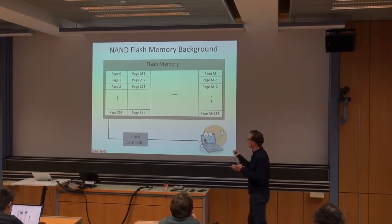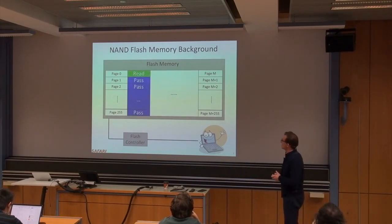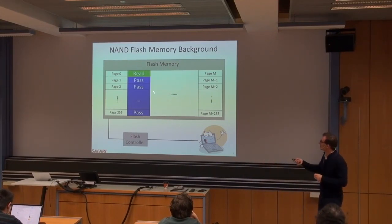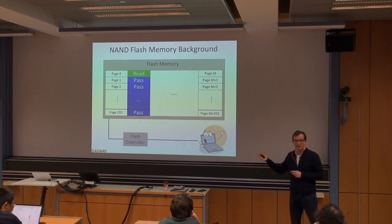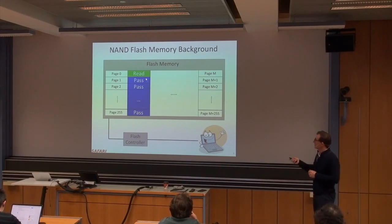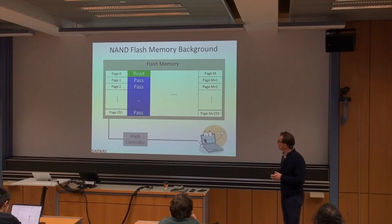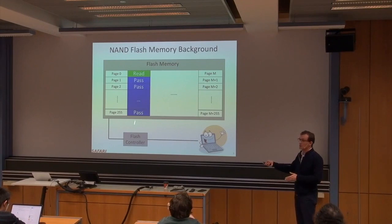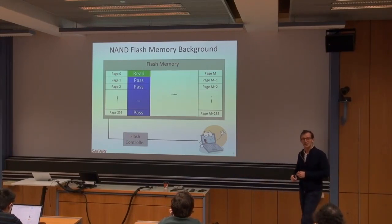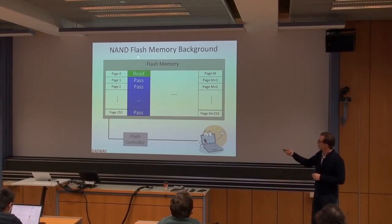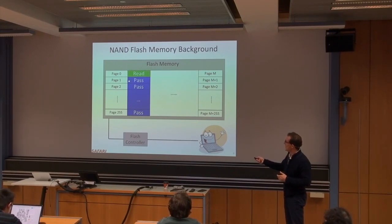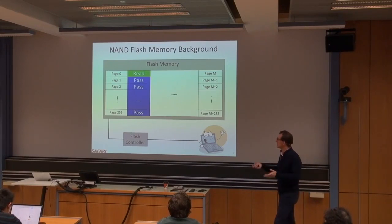If you want to read a page — say page zero in a block — you apply a read reference voltage to that particular page and a pass-through voltage to everything else. This is because of the way flash memory operates, and it's different from DRAM. In DRAM, you apply a high voltage to the word line you want to activate and don't touch other word lines. In flash, cells are connected in a NAND string to optimize for high capacity, so you need to ensure the string passes through to the sense amplifiers.